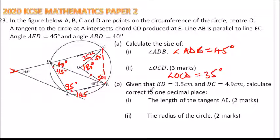So we look at part B of the question, given that ED is 3.5 centimeters and DC is 4.9 centimeters. Calculate correct to one decimal place, the length of the tangent AE.